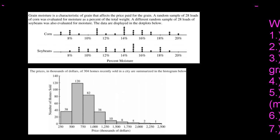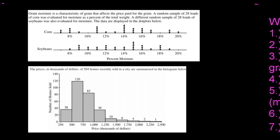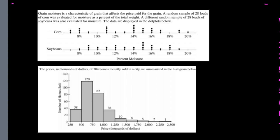Here's a dot plot showing the percent of moisture — the percentage of total weight that's moisture — in corn and soybeans. If I'm going to compare them, I want to mention shape, center, and spread. For shape, they both look pretty symmetric; neither looks really skewed, both kind of lower on the outsides and higher in the middle.